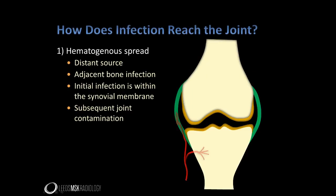In native joints, the most common route of joint infection is hematogenous spread. A transient or sustained bacteremia gains access to the joint through the synovial membrane. Synovium lacks a protective basement membrane and access by blood-borne bacteria is relatively easy. Conditions increasing blood flow to the synovium have the potential to increase the risk of joint sepsis.